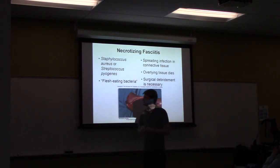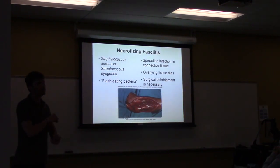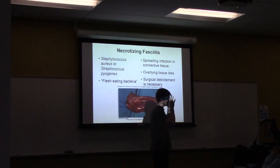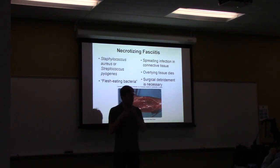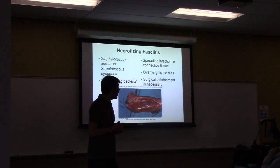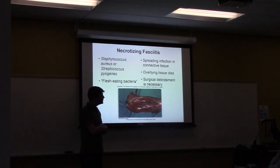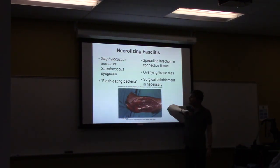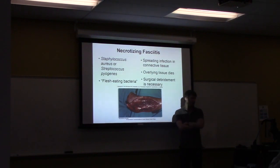Necrotizing fasciitis is where S. aureus or S. pyogenes works through the skin layers and into deep tissue — in this case, muscle. Once in muscle tissue, the organism grows out of control because immune cells have difficulty penetrating dense muscle tissue, and antibiotics — whether oral or intravenous — also don't penetrate muscle well. If untreated, this results in widespread tissue damage and destruction. The only treatment is to amputate and debride — cutting off dead necrotic tissue and scraping away as much of the organism as possible.